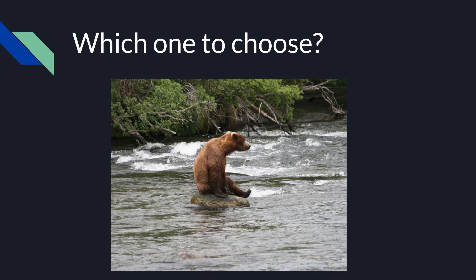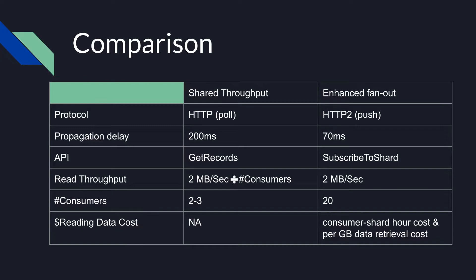Given these points, you are probably now thinking which stream consumer to choose. Let's see a comparison between the two. Enhanced Fanout has lower read propagation delay because it uses HTTP/2, which uses persistent connections and pushes records to consumers using the SubscribeToShard API, instead of shared throughput that uses HTTP with the GetRecords API and pulls from the stream. With Enhanced Fanout, records are available to be processed about 70 ms after being written to the stream, compared to about 200 ms for shared throughput consumers, and the latency increases with each additional consumer that shares the throughput.